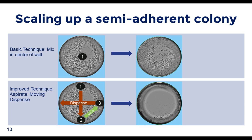For larger wells, a moving dispense technique can be utilized, emulating what a person does. Developed with extensive support from a Beckman Coulter expert, mixes are performed at edge locations with dispenses occurring as the tip moves across the well, dislodging cells. For example: mixing at location 1, aspirating at location 1, then dispensing while moving from location 1 to location 2. Key optimization questions include: how much volume to mix, how fast to mix without losing viability, and what pattern to use. Performing the final aspiration close to the edge and bottom of the well was found sufficient — no need to tilt the plate.